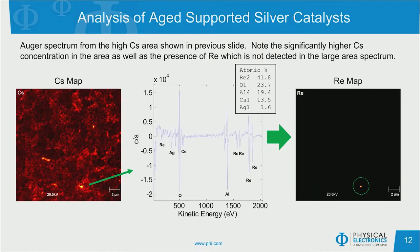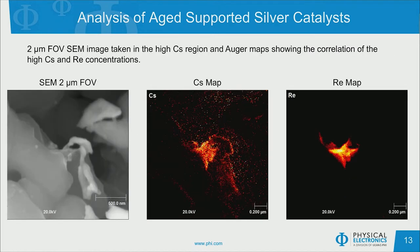We can continue the analysis of the bottom cesium hotspot by performing a localized survey spectrum of that particular particle region. We see an increased cesium concentration of approximately 13%, and also see indication of rhenium in this location. With this information in mind, we can perform a rhenium map across the entire field of view, and we do see that rhenium is also located in the hotspot of cesium. To get very fine detail of the rhenium hotspot region, we collected a 2 micron field of view SEM and performed both a cesium map and a rhenium map. We are able to see a cesium feature approximately 200 nanometers across, and the rhenium map shows that rhenium is also co-located in the area with high concentration of cesium.